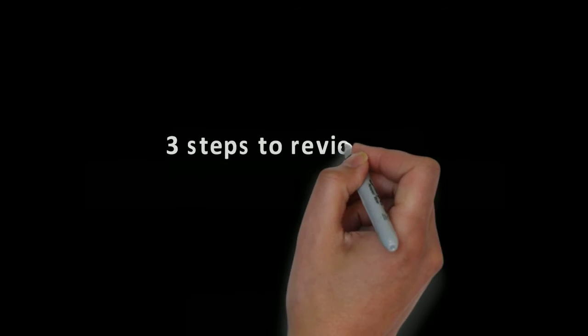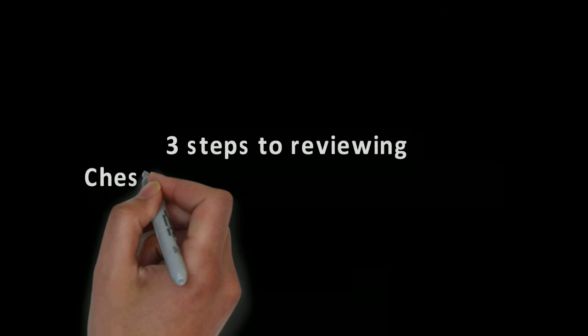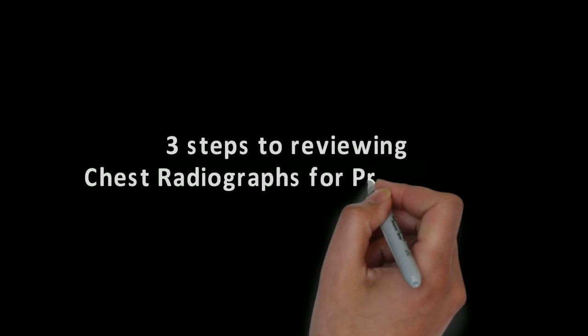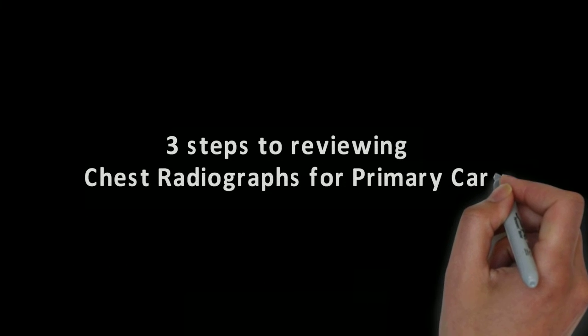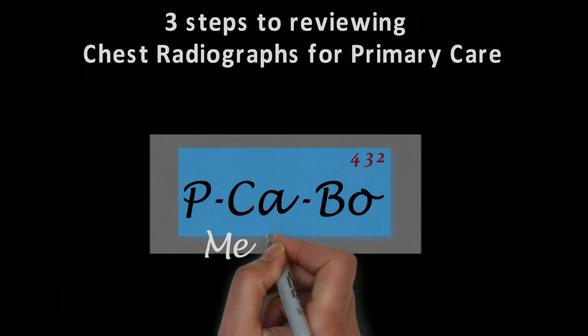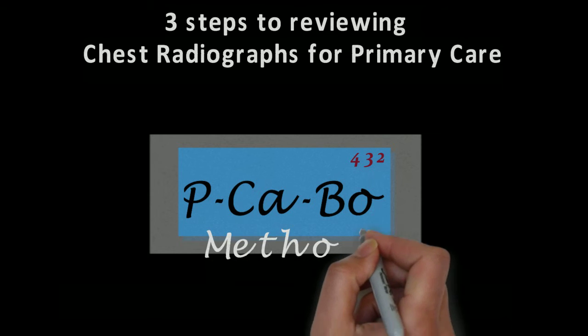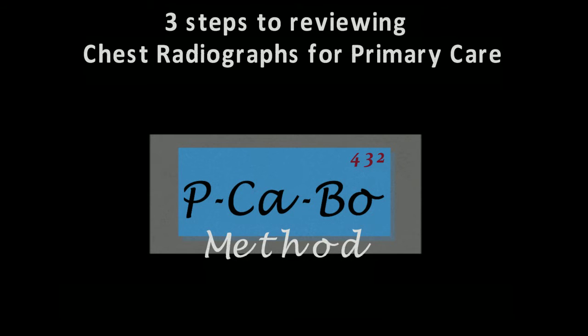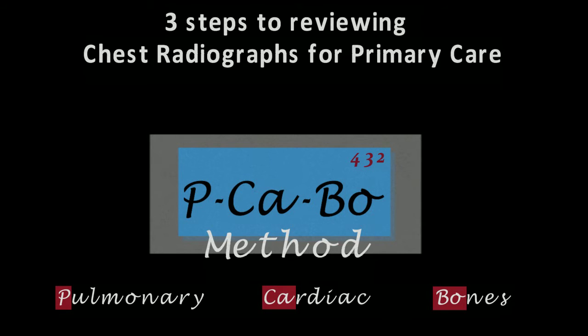I'm going to show you a quick and easy method to help you strategically review the radiograph in order to identify the common pathology in primary care. I call this three-step method Peekaboo 432. After applying these simple steps, you'll be able to locate and find pathologic changes on radiographs. Peekaboo stands for pulmonary, cardiac, and bones.